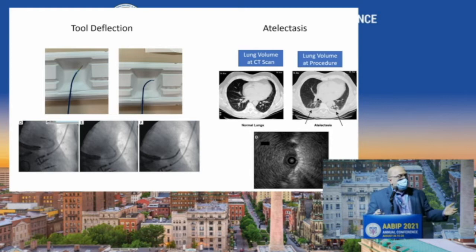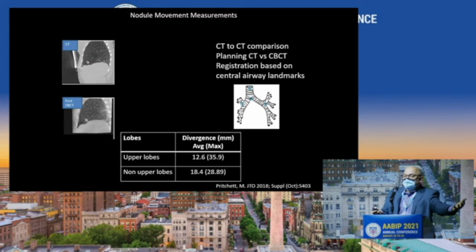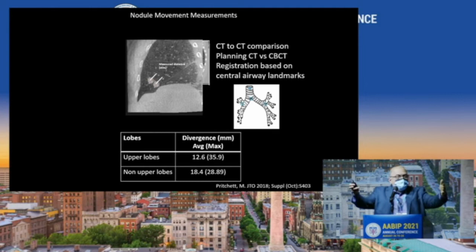Tool deflection is a problem, especially with plastic catheters — you put a tool in and they flex differently. Atelectasis develops during bronchoscopy, and then there's nodule movement: where the nodule is at the time of the CT is not where it is at the time of your procedure. A study by Mike Pritchett showed that depending on whether the nodule is in the upper or lower lobes, you can have quite a bit of registration difference.